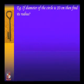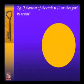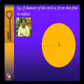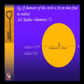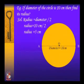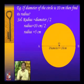Let us understand by example. If the diameter of this circle is 10 centimeters, then find its radius. We take a circle with center point O and points A and B on the circle, where diameter = 10 cm. Radius = diameter / 2 = 10 / 2 = 5 centimeters. So the radius of the given circle is 5 centimeters.